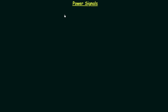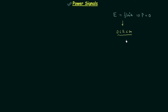We have already seen what energy signals are, and now in this lecture we will discuss power signals. A signal is said to be an energy signal if and only if its total energy is finite, and when this happens, the average power P becomes zero. The range of total energy E satisfies 0 < E < infinity, since the modulus in the formula ensures E cannot be negative.